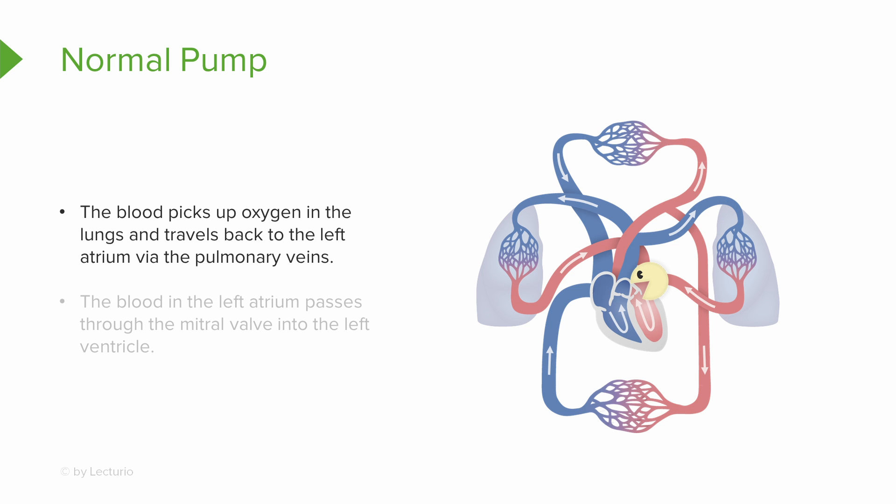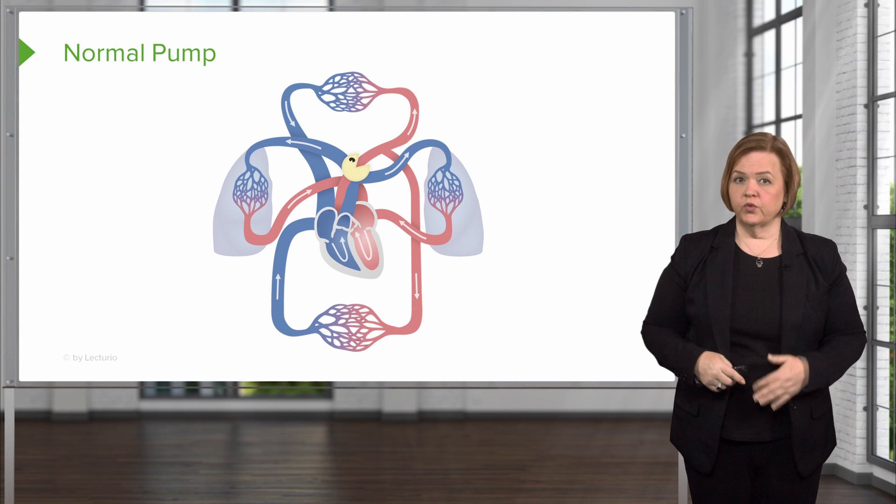The blood picks up oxygen in the lungs and comes back to the heart on both sides — from both the right and left lung to the left atrium. In the left atrium, it passes through the mitral valve into the left ventricle. The left ventricle's job is to send blood out up to the brain and down to the rest of the body, carrying oxygen.